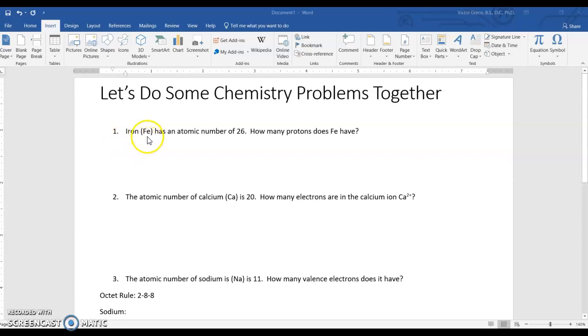First one says iron, which has an atomic symbol Fe. It has an atomic number of 26. How many protons does iron have?